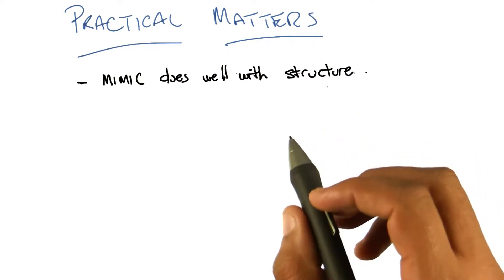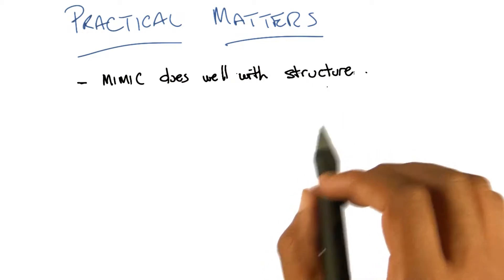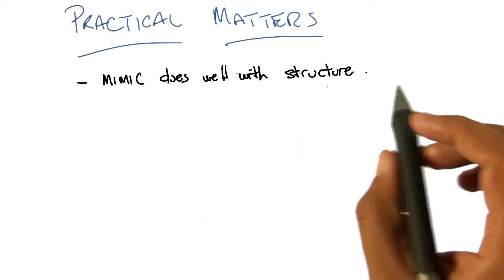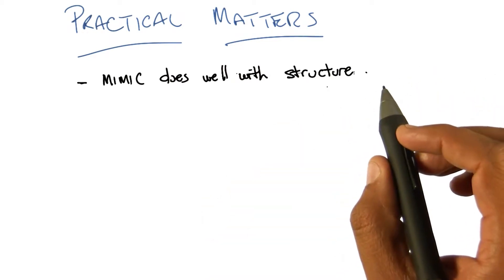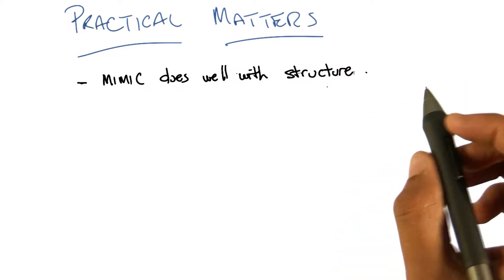By contrast, randomized hill climbing, genetic algorithms, these other things that we looked at before, can sometimes get confused by two different values that are both optima but look very different from one another, where it's the structure that matters and not the actual values.